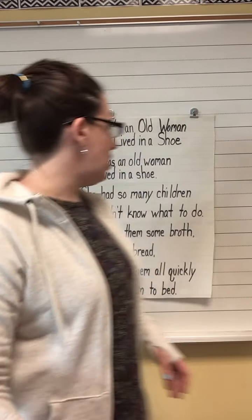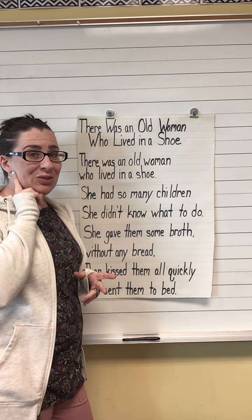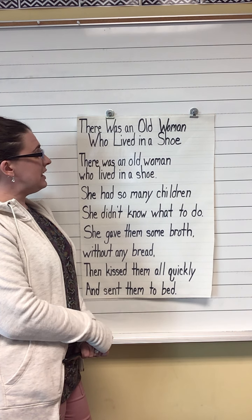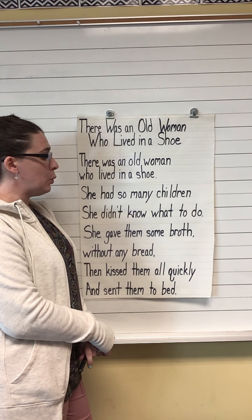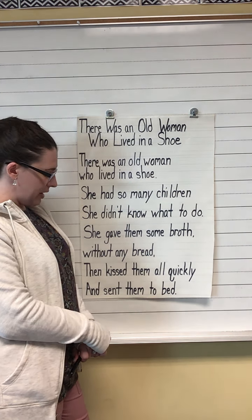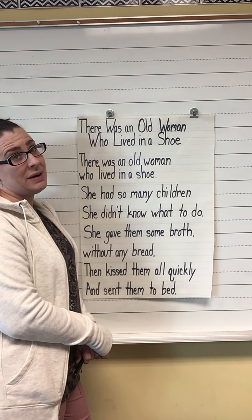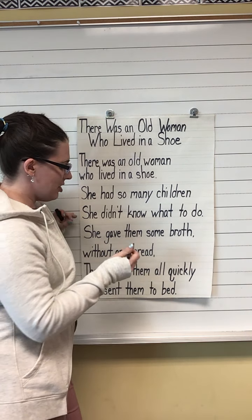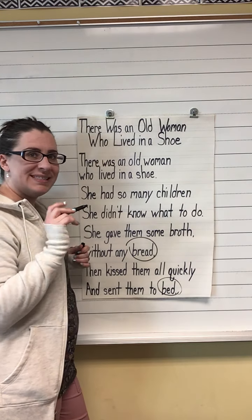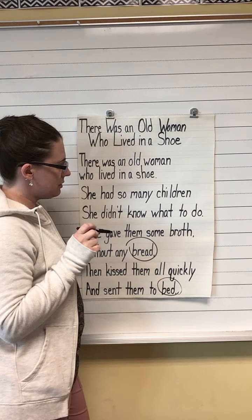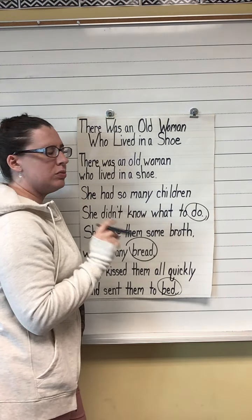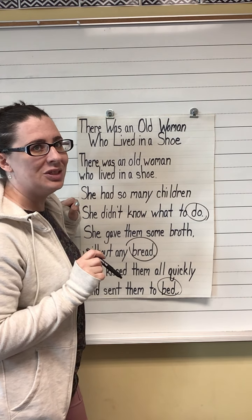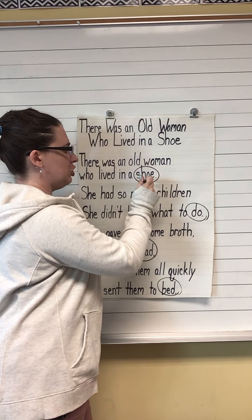Let's look at our nursery rhyme that we've been working on this week. There was an old woman who lived in a shoe. I'm going to read it through one time — listen carefully for words that rhyme. "There was an old woman who lived in a shoe. She had so many children, she didn't know what to do. She gave them some broth without any bread, then kissed them all quickly and sent them to bed." Did you hear any words that rhymed? Bread and bed have that same sound at the end. And shoe rhymes with do. Shoe, do.